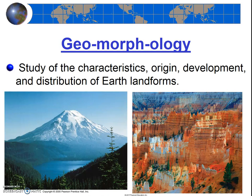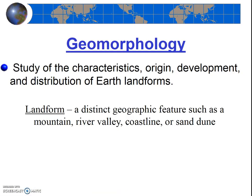This is the official definition: the study of the characteristics, origin, development, and distribution of earth landforms. So the next question is: what do we mean by landforms? A landform is any distinct geographic feature that we see on the earth.